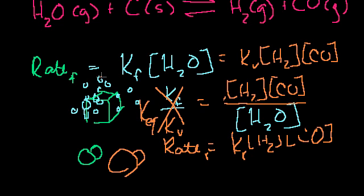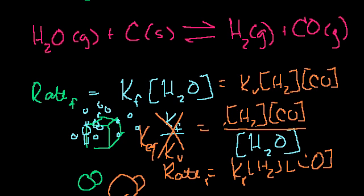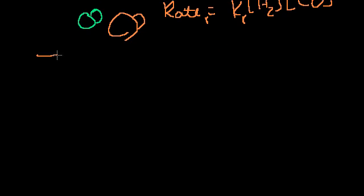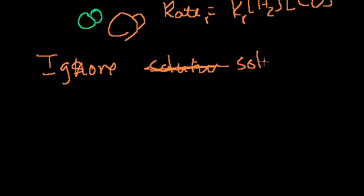So the two takeaways here is when you're trying to calculate an equilibrium constant, you should ignore, especially when it's in a heterogeneous equilibrium, you should ignore the solution, or not the solution, ignore the solvent.